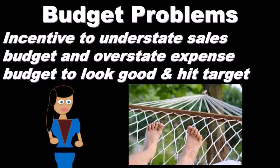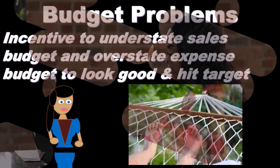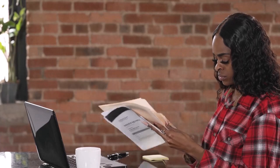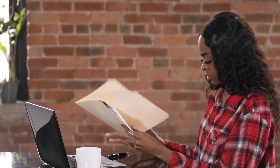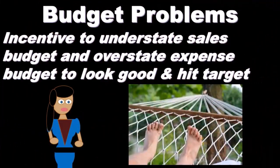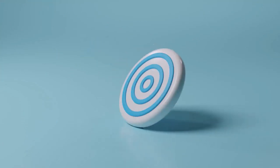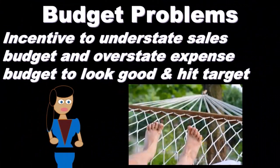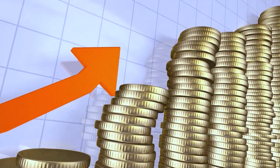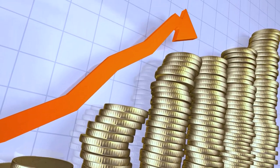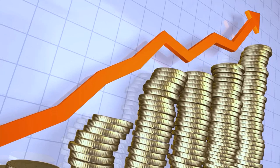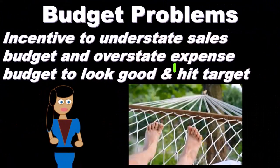In other words, if they overstate the sales and understate the expenses — which is what we would want, we want sales to be high and expenses to be low — then it'll be harder to hit that target, and if they don't hit it they look bad. But if they set a low target with low sales and high expenses that they know they can achieve, it'll be easier to hit and when they hit it, it will look better.